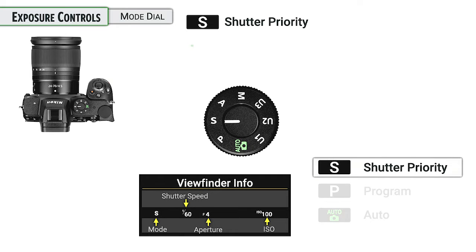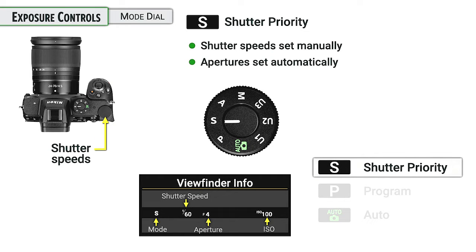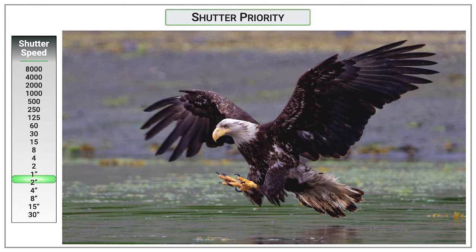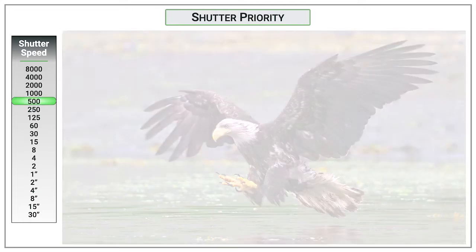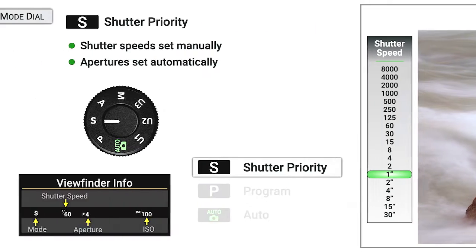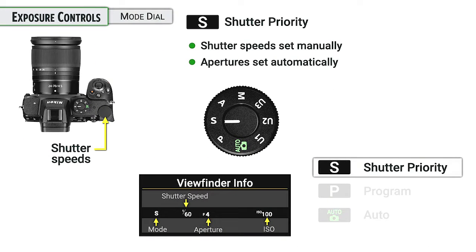Next up is shutter priority. Here you get control of the shutter — you can set whatever shutter speed you want, and the camera will figure out the correct exposure by adjusting the aperture. This can be very good for times when you know you need a very specific fast shutter speed, for instance capturing an eagle coming into a river to grab a fish. You could also choose a very slow shutter to show the motion of water moving through a river. Here you get to select the shutter; the camera will figure out the apertures for you.